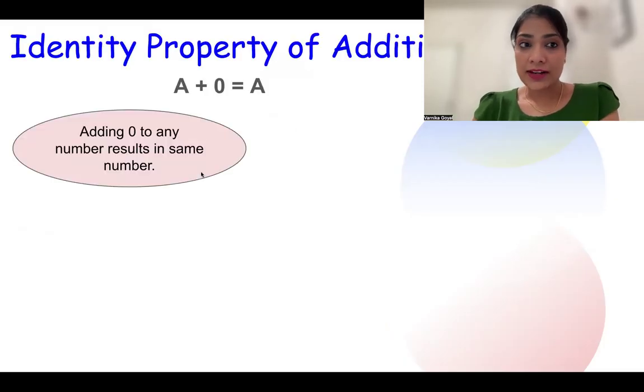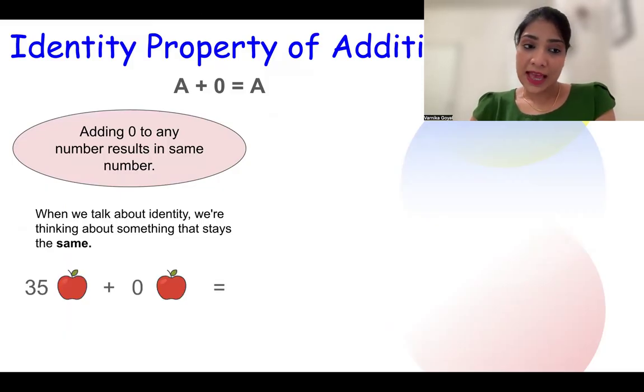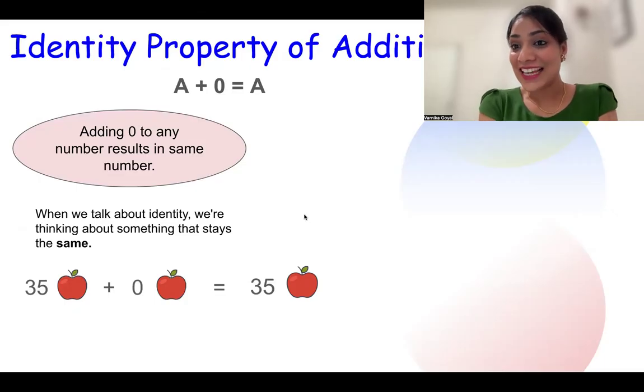Adding zero to any number results in the same number. When we talk about identity, we are thinking about something that stays the same. So for example, if I have 35 apples and I add zero apples more, how many apples will I have? Still 35 apples. So this was our identity property.